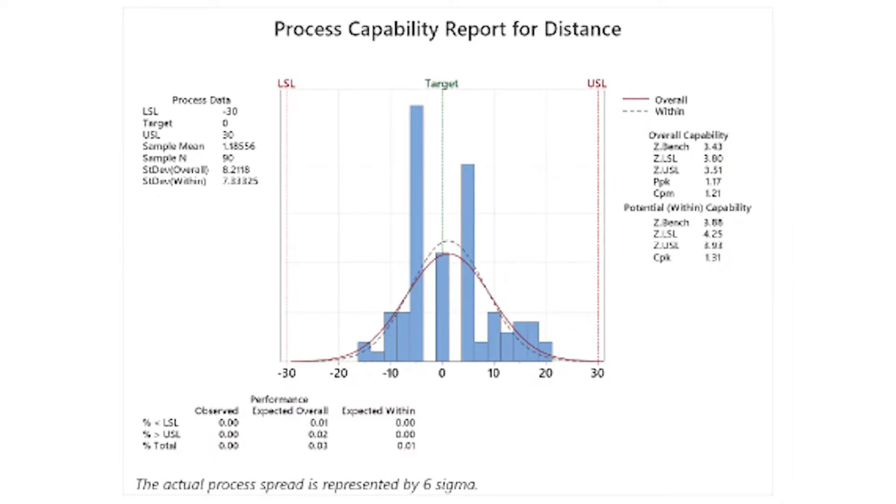Next, we perform a process capability analysis before improvement. The CPK is 1.31, which is less than 2. This indicates that further improvement could be made to increase the likelihood of throwing the ping pong ball into the cup. But overall, it is still acceptable, as it is normally distributed.